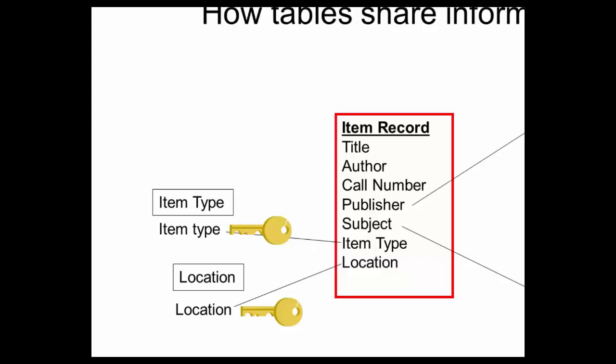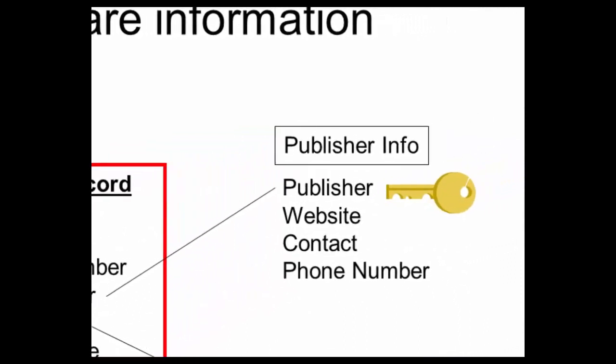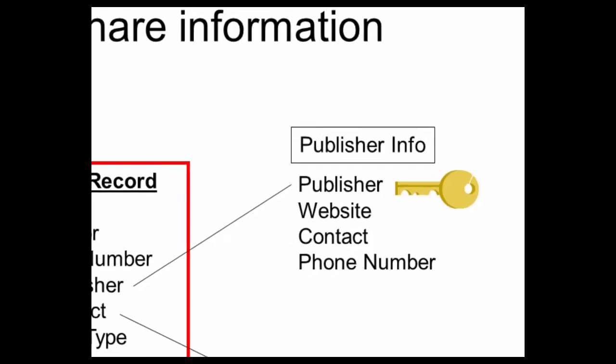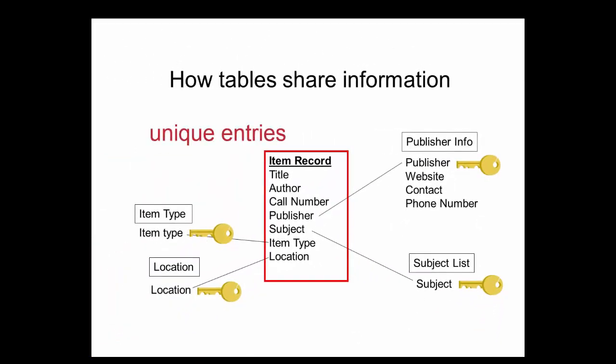Every table has a primary key. When a table has multiple fields, the field chosen for this honor is usually the one on which the table is based. In a table called publisher info, the logical candidate for primary key would be the publisher field. The phone number, website, and contact fields are supporting fields providing additional information about the publisher. The primary key field must contain unique entries — duplicate entries are not permitted. When looking up a particular record in a table, folks depend upon the primary key to ensure they're pulling the correct record. The primary key is what positively identifies that the record found is indeed the record being looked up.